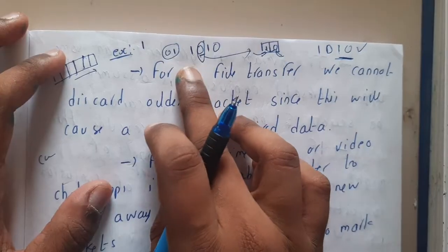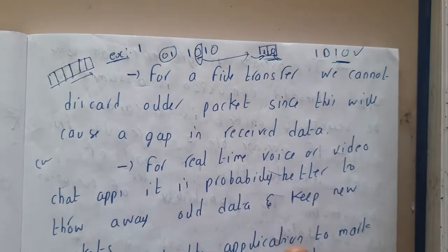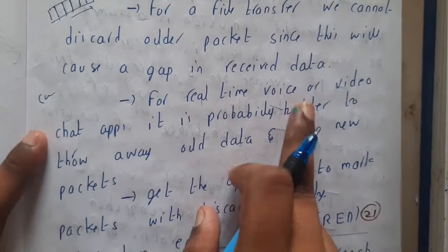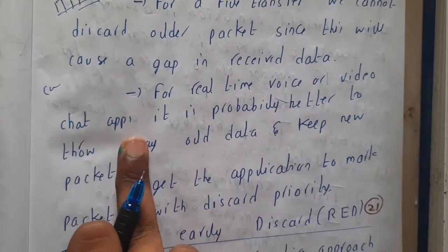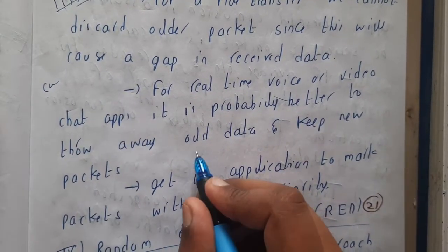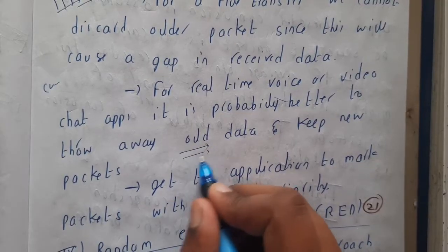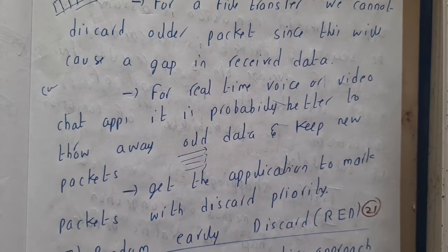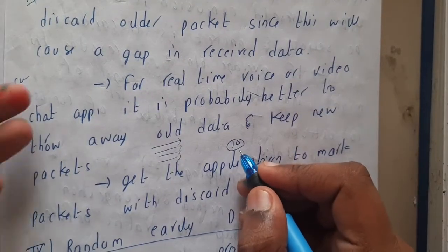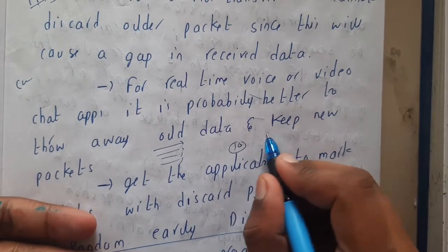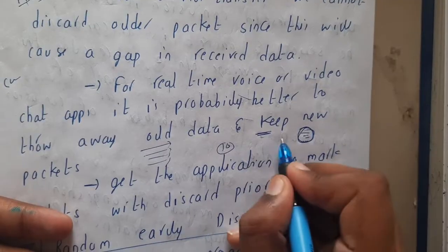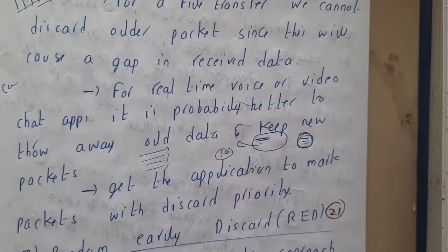The discarded things can be resent again later. For real-time voice or video or chat apps, it is probably better to throw away the older data, keeping the new packets. For example, if you transferred messages to your friend every day for 10 years, in the latest feed he should see the most recent messages - so old messages should be discarded and the latest messages kept safely.